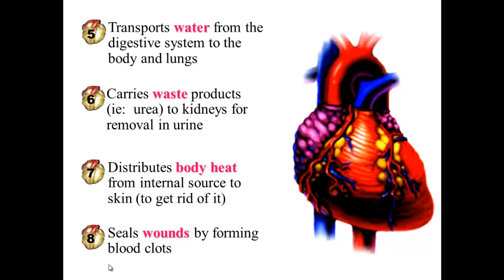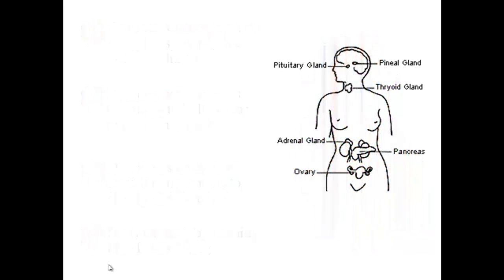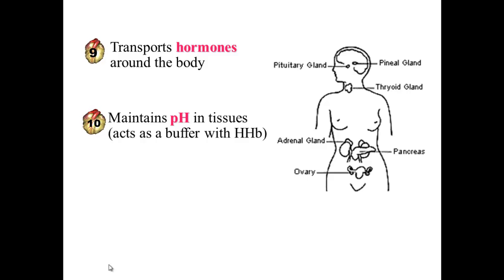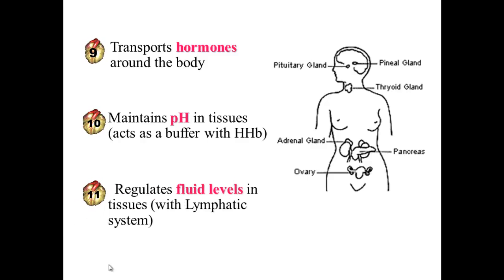It also forms blood clots when you injure yourself, and transports hormones around the body. It maintains the pH in our tissues because hemoglobin acts as a buffer, as you remember from our buffer unit. And it regulates how much fluid is in our tissues — it does that with the lymphatic system.